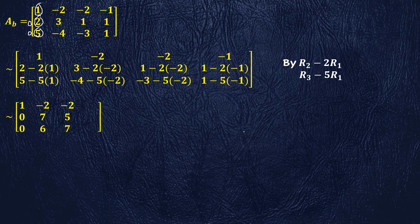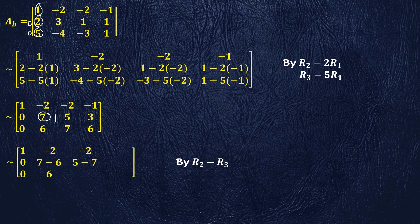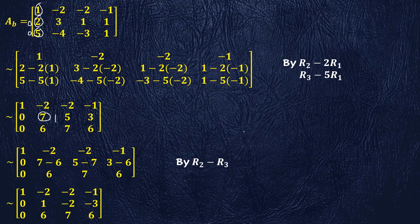Now we note that the first non-zero element in the second row is 7. We transform this element 7 into 1. For this, we subtract R3 from R2. After performing this row operation, we are left with the transformed augmented matrix of this form.